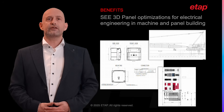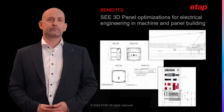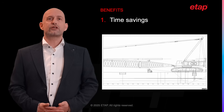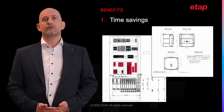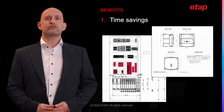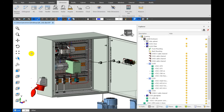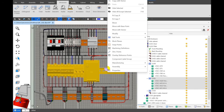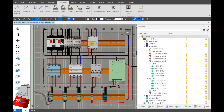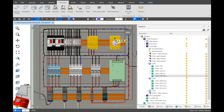Now let's dive into the specific benefits of C3D Panel and how it optimizes electrical engineering in machine and panel building. With C3D Panel, engineers can streamline the design process by working directly in a 3D environment. This eliminates the need for multiple iterations of 2D drawings and reduces the time required to finalize designs. The platform allows quick modification and iteration, enabling engineers to make changes on the fly and see the impact of those changes in real time. This flexibility reduces the time spent on design revision and accelerates the overall process timeline.